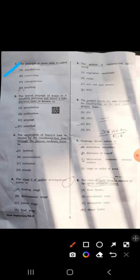Seventh: drainage divide refers to watershed boundary. Now eighth question: ratio of basin area to square of the basin length is called form factor.